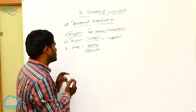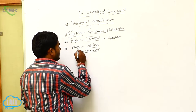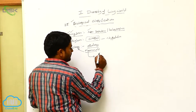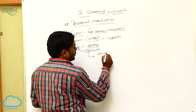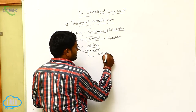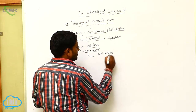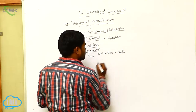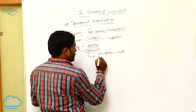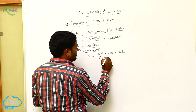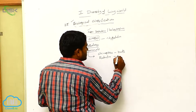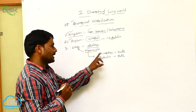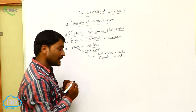In the mammals class, there are different types of orders. Chiroptera, in which bats are joined. Next one is Rodentia, in which rats are joined. So Chiroptera: bats; Rodentia: rats.